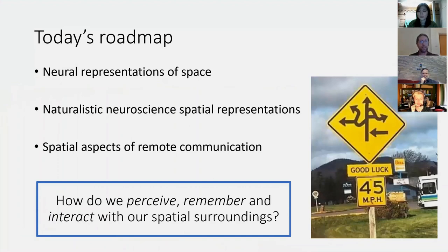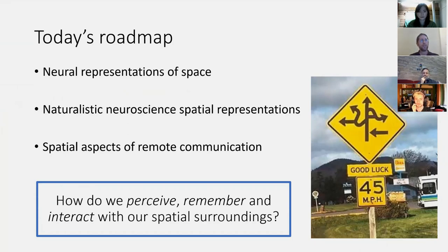Today I have three topics to discuss. First, the neural representation of space — I'll talk about a paper published in PNAS from about a year and a half to two years ago about grid cells. Then I'll discuss how we can take results from VR into a more naturalistic paradigm. Finally, I'll talk about some very early work on the spatial aspects of remote communication and improving the Zoom experience.